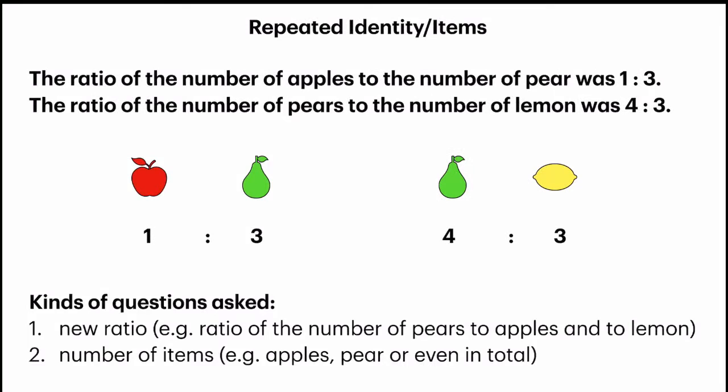So what kinds of questions will be asked? You may be asked to find a new ratio, for example, the ratio of the number of pears to apples and to lemon. Or you may be asked to find the number of items, for example apples, pears, or you may even be asked to find total of fruits.